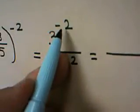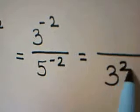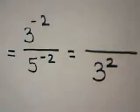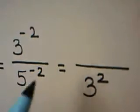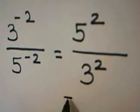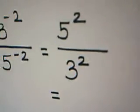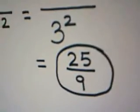3 to the negative second power on the top drops down to the denominator as 3 to the positive second power. 5 to the negative second power in the denominator moves up to the numerator as 5 to the positive second power. When you square those out, the numerator becomes 25, the denominator becomes 9, and that's how we get our answer: 25 over 9.